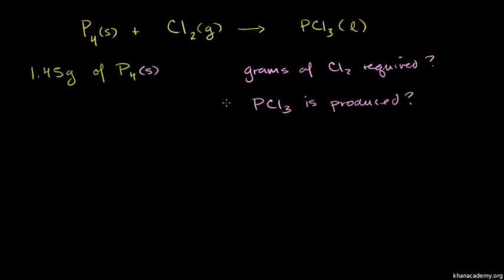Before you do any of these stoichiometry problems — that's just a fancy word for problems where you need to figure out how much of a certain reactant is required or how much of a product is going to be produced — before you do any of these problems, you have to make sure that your equation is balanced.